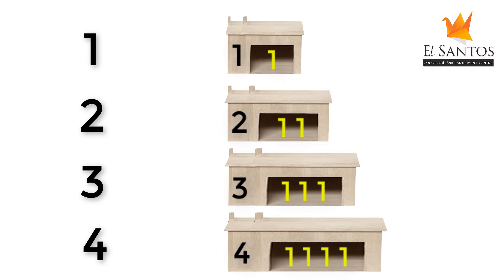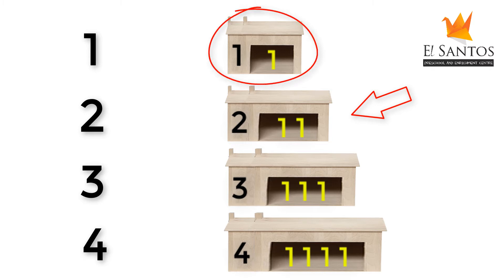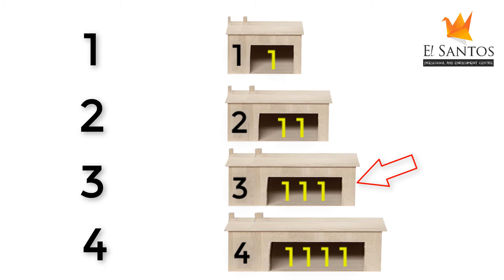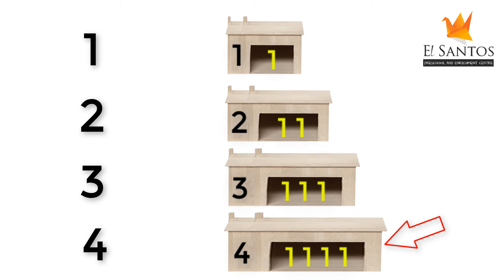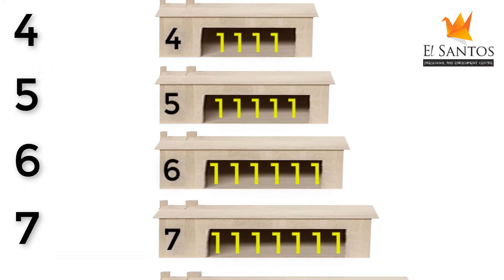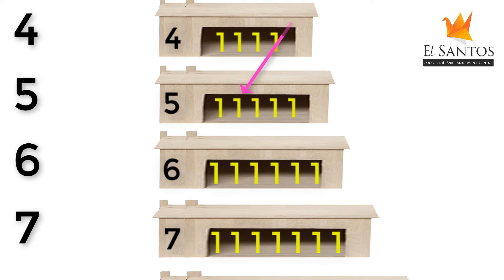Observe that the houses are becoming bigger as the numbers increase. The two's house is bigger than one, the three's house is bigger than two, and the four's house is bigger than the three's. As you write numbers down this line, it gets bigger and bigger. Now I'm sure you know what the five house has — five ones. Let's count: 1, 2, 3, 4, and 5.